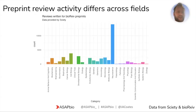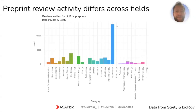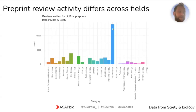Interestingly, preprint review activity differs greatly across fields. Looking at bioRxiv data, neuroscience is very much leading the way for review activity. If you map this to the numbers of preprints per category on bioRxiv it kind of matches up — neuroscience is the leading category for preprints anyway. So it looks like a field that adopts preprints quickly will also adopt preprint peer review quite quickly.